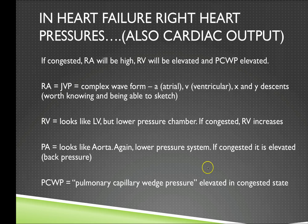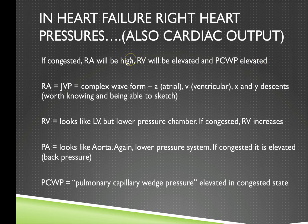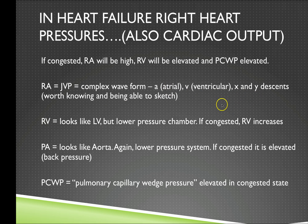When looking at right heart failure, we examine right heart pressures and cardiac output. In the congested state, the right atrial pressure will be high, right ventricular pressure will be elevated, and pulmonary capillary wedge pressure will be elevated due to back pressure through the right heart. Regarding waveforms taken during right heart catheterization, the most complex is right atrial pressure, which is essentially the same as jugular venous pulsation — with A, C, V waves and X and Y descents. Right ventricular pressure tracings look similar to the left ventricle but at much lower pressures.